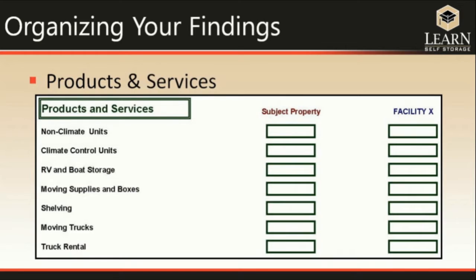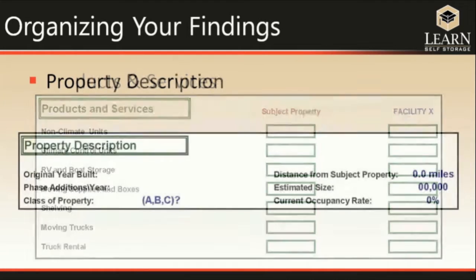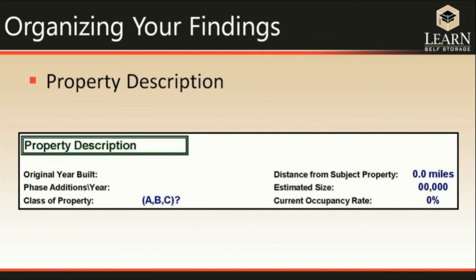Next, look at products and services: is the competitor offering both non-climate and climate-controlled units, RV and boat storage, moving supplies and boxes, shelving, and moving truck rental? Finally, create a summary for the property description: what year was it built, have they added phases, and what class is the property? A Class A property is a very high-end, recently built facility with both climate and non-climate control, a clean interior and exterior, an on-site manager, and very high-tech security.